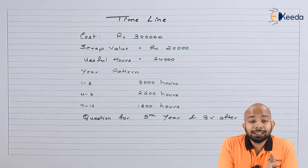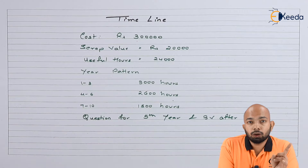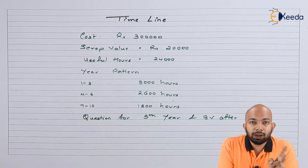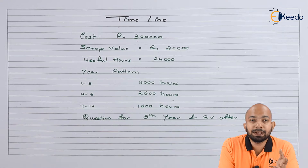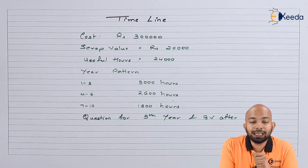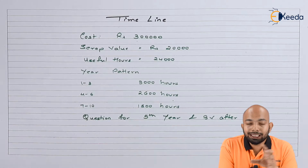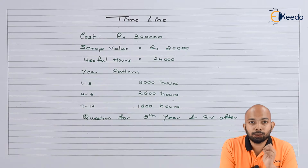We have jotted down the key details from the question: cost, scrap value, useful hours, year pattern, and the requirement for the 5th year depreciation and book value after subtracting depreciation. We will go ahead with the working note and understand how per year depreciation is calculated as per the format provided.